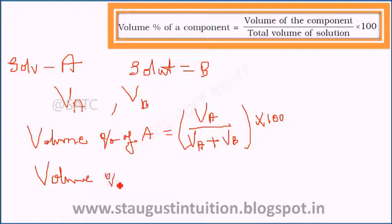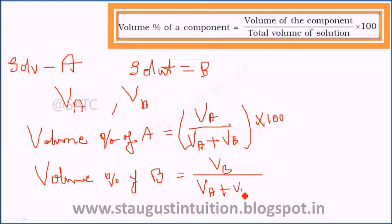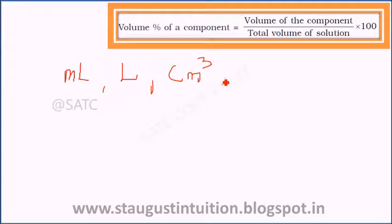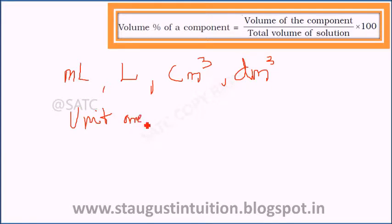Similarly, volume percentage of B is the volume of B divided by the volume of A plus volume of B, multiplied by 100. The unit cancels in numerator and denominator since both are in the same unit, such as millilitres.